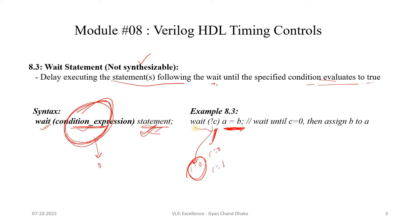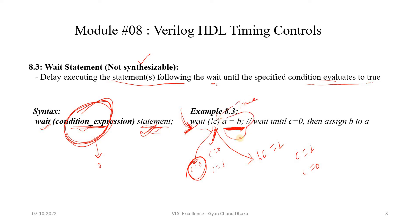For example: `wait (!c) a = b`. This means until `!c` becomes 1, the statement `a = b` will not execute and the simulation control will wait at this statement. Once c becomes 0, `!c` will become 1, the condition will be true, and the statement will get executed.